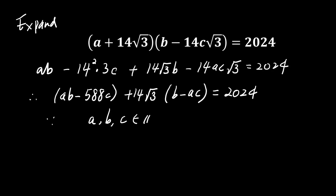Notice that the product includes both rational and irrational parts. For this equation to be satisfied, the rational part must equal 2024 and the coefficient of root 3 must vanish. Thus, we have two separate conditions.